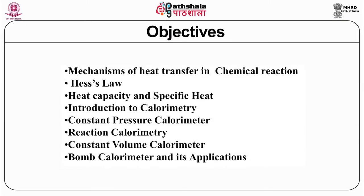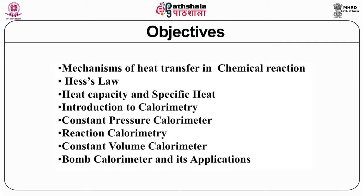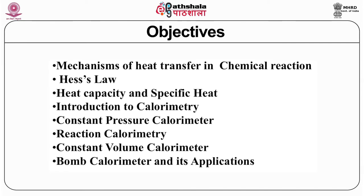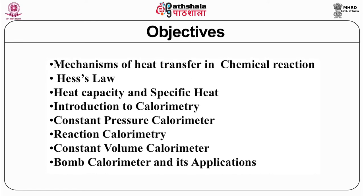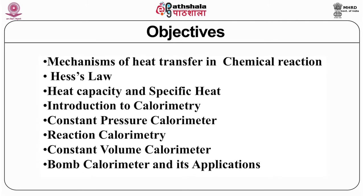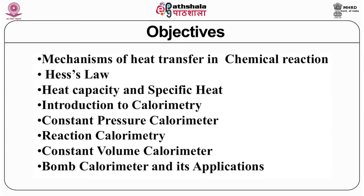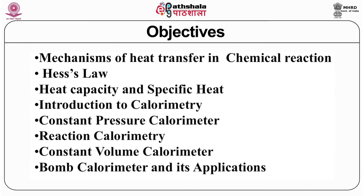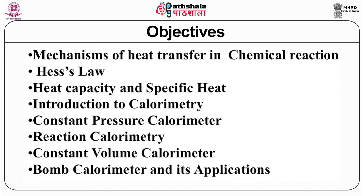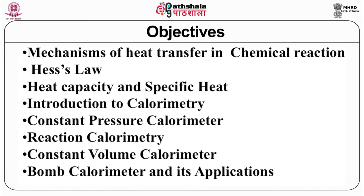Based on this introduction, the objectives of this module are as follows: firstly we will do the mechanism of heat transfer in a chemical reaction, then study Hess's Law, then introduce heat capacity and specific heat — both are different — then an introduction to the calorimetry method, different types of calorimeters including constant pressure, reaction, and constant volume calorimeters, and the bomb calorimeter with its applications in biological and industrial samples.